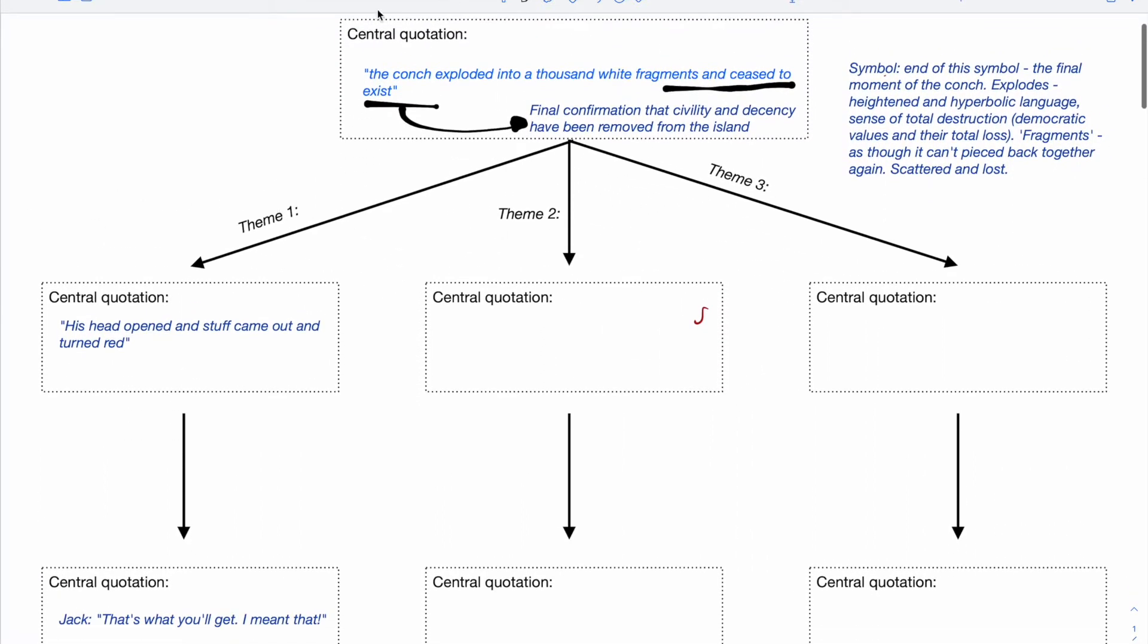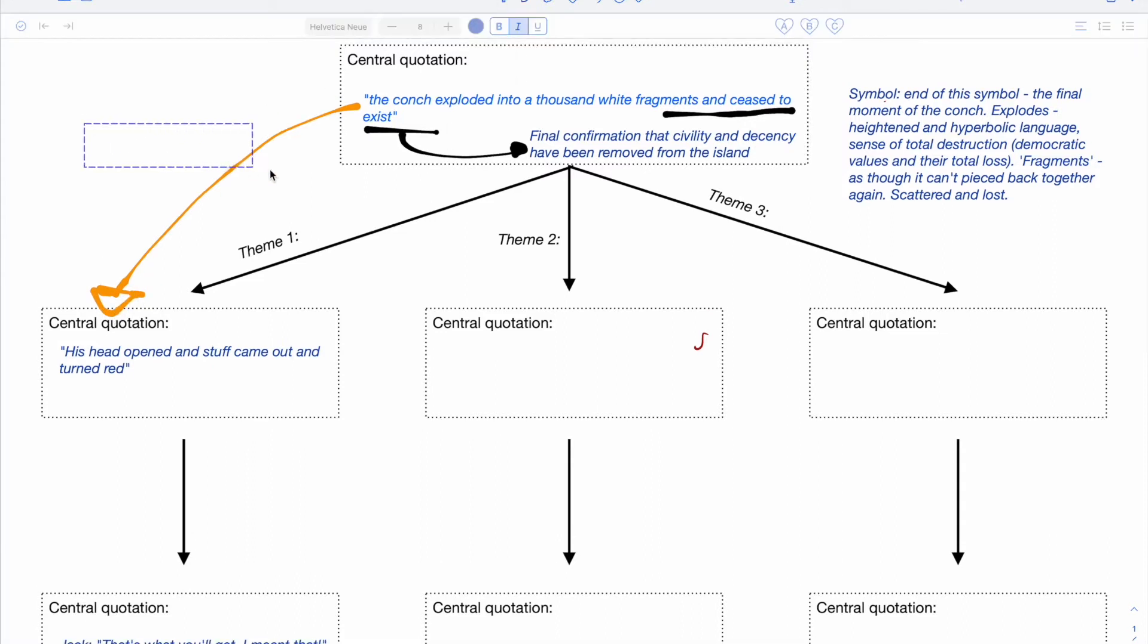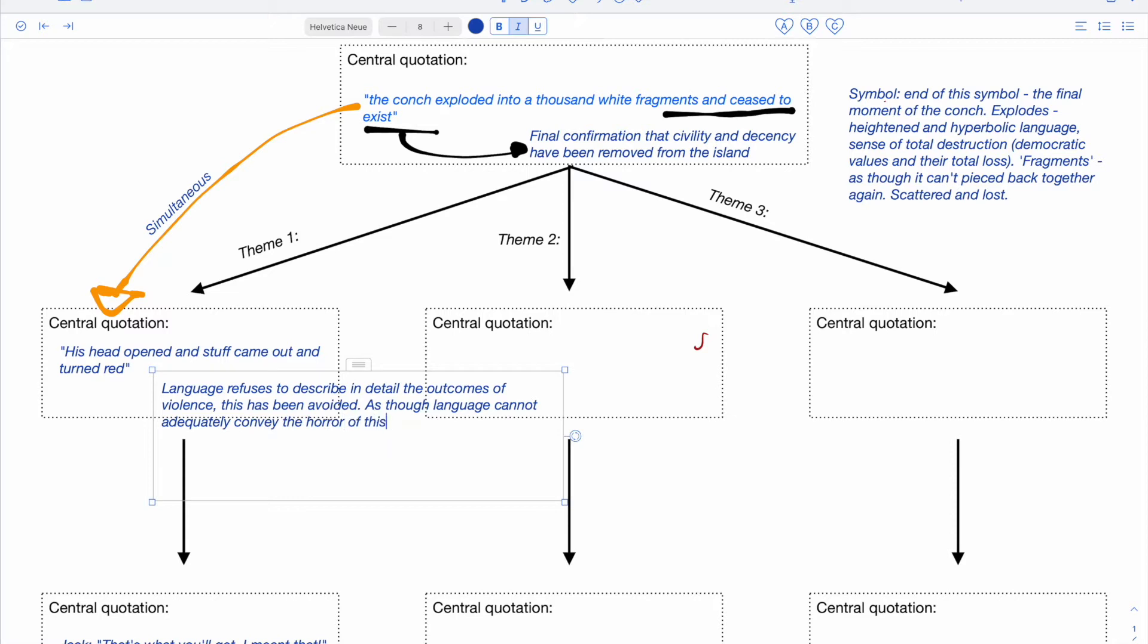It is the final confirmation, because we've seen it coming for a long time, that civility and decency have been removed from the island. We've known this has been coming for ages, but this is that confirmation that Golding is confirming that those values have been lost totally. Now that happens almost simultaneously with this moment here, and that's worth noting. So these things I want you to imagine as simultaneous moments. And then we can add in and throw in here the same sort of approach to violence. Again, the language refuses to describe in detail the outcomes of violence. This has been avoided. It's as though language cannot adequately convey the horror of this spectacle.